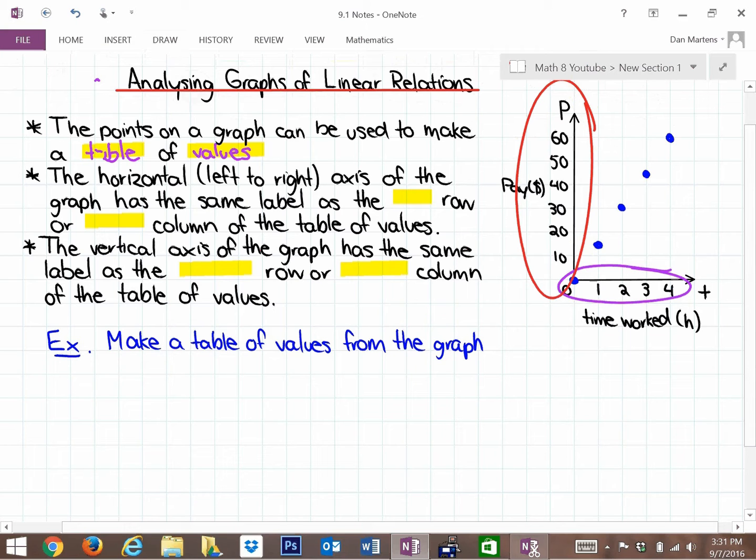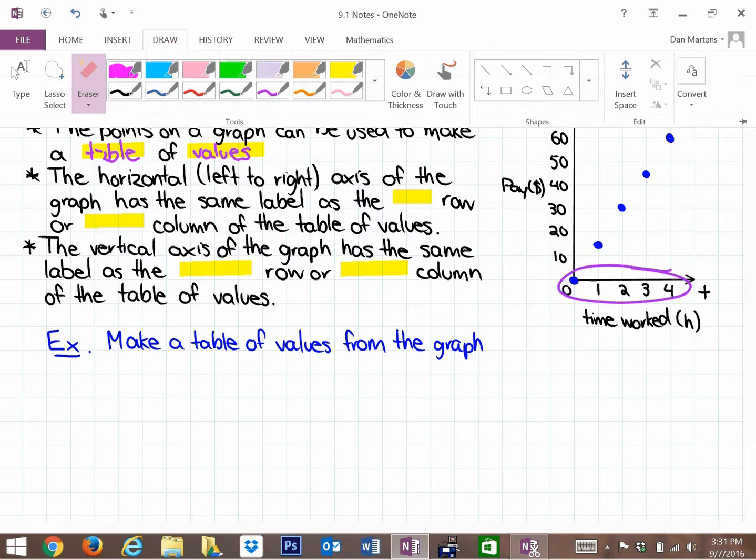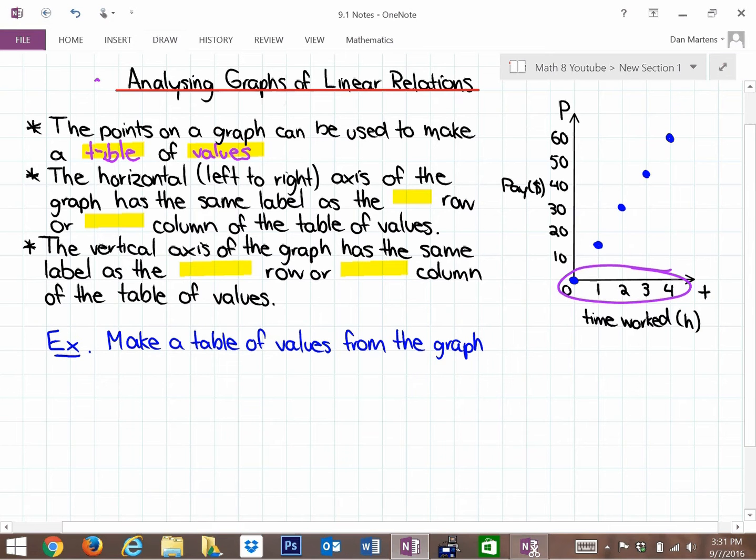The horizontal or left to right axis of the graph has the same label as the top row or left column of the table of values. What we're going to see later is that the letter T, which represents the horizontal axis or time worked, is going to be the first column or row in our table of values.